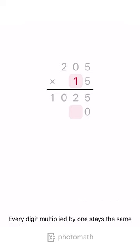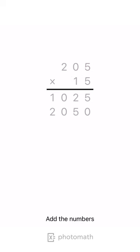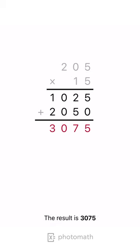Every digit multiplied by 1 stays the same. Add the numbers. The result is 3,075.